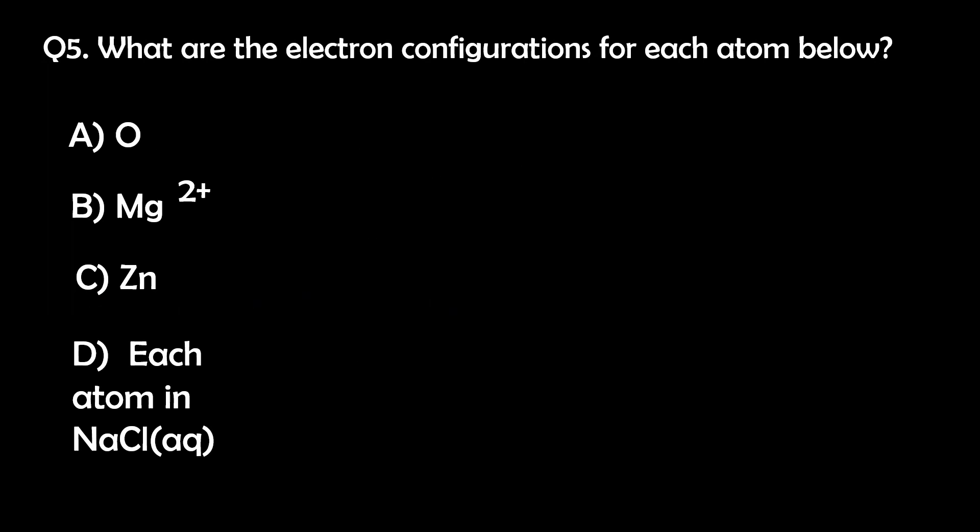Question 5. What are the electron configurations for each atom below? For oxygen, its electron configuration is 1s2, 2s2, 2p4.